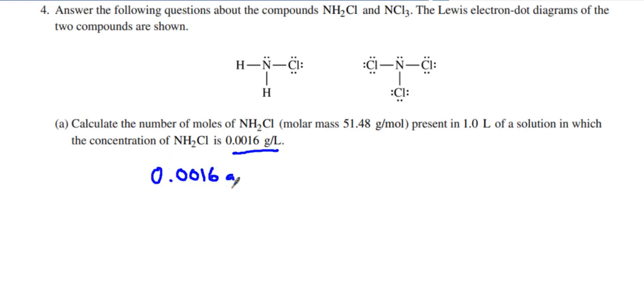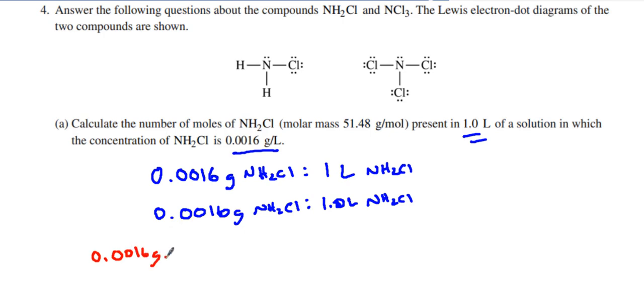It is 0.0016 grams of NH2Cl for every one liter of NH2Cl, which means if we have 1.0 liters of NH2Cl, then we have 0.0016 grams of NH2Cl. Obviously that's just a ratio. If they gave us a different volume, we could easily find the number of grams in that. And so what do we do with grams is we take our 0.0016 grams of NH2Cl, we always divide by the molar mass, which is 51.48 grams per mole, and that would give us the number of moles.